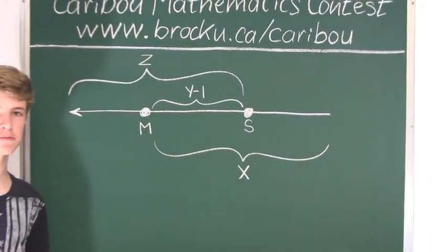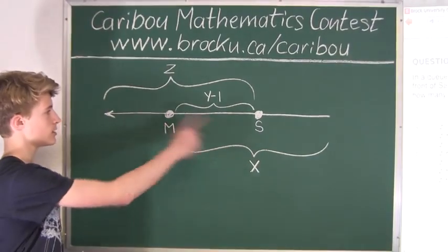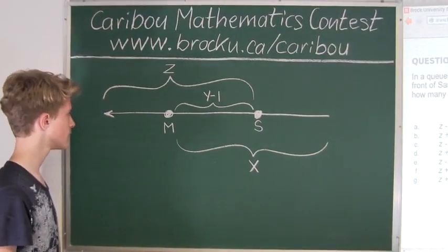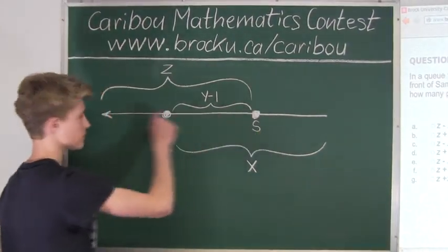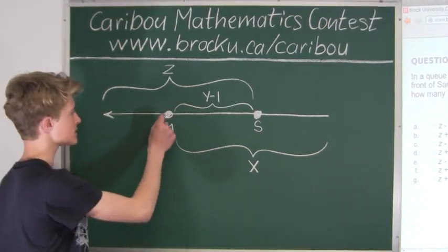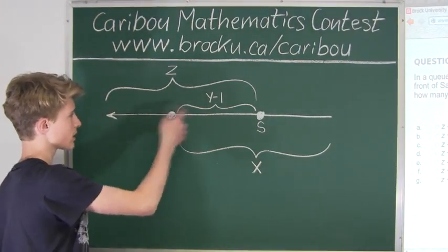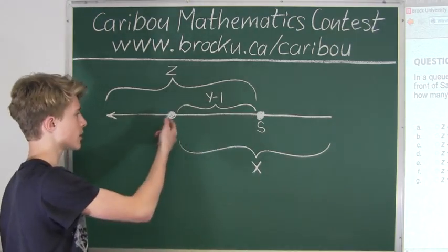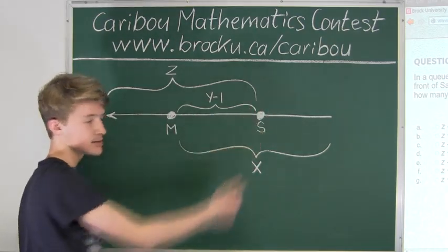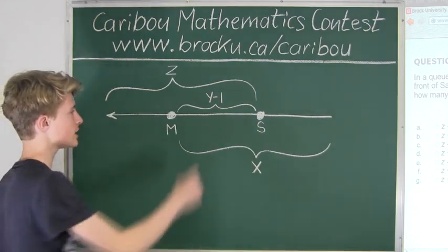So the easiest way to solve this problem was to just draw a picture of the queue. So this line here is representing the queue, and the points M and S are showing Mark and Sam in the line, showing that Mark is in front of Sam as stated in the question.